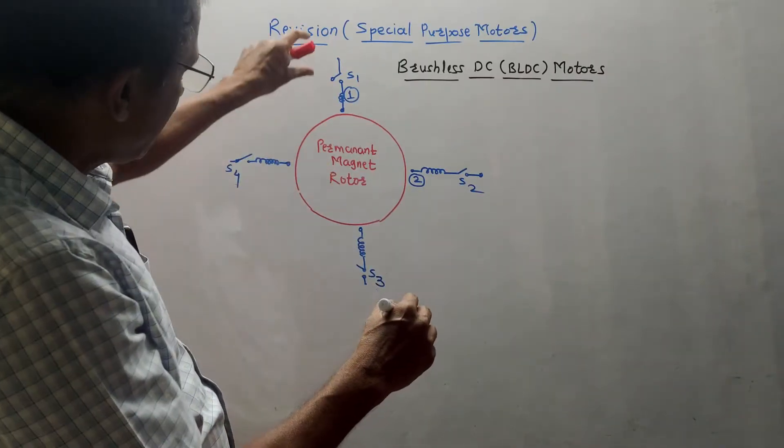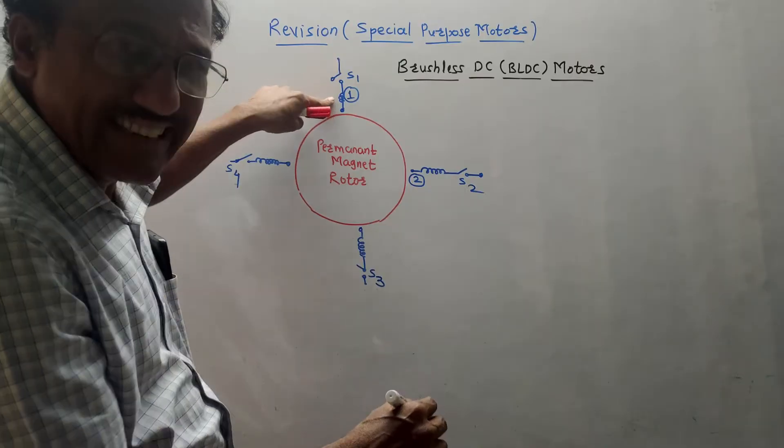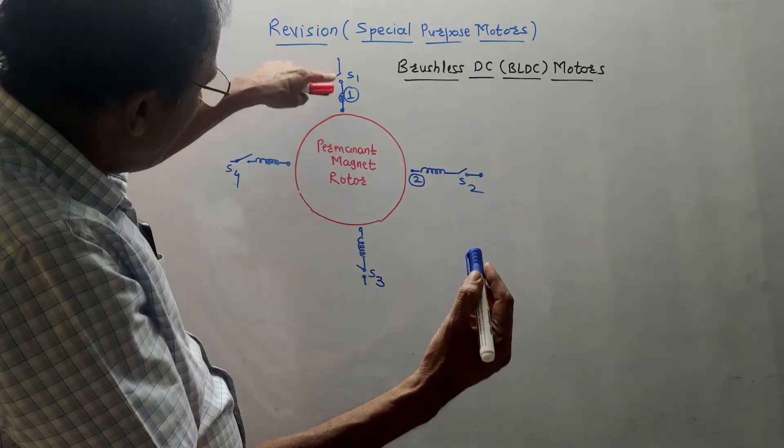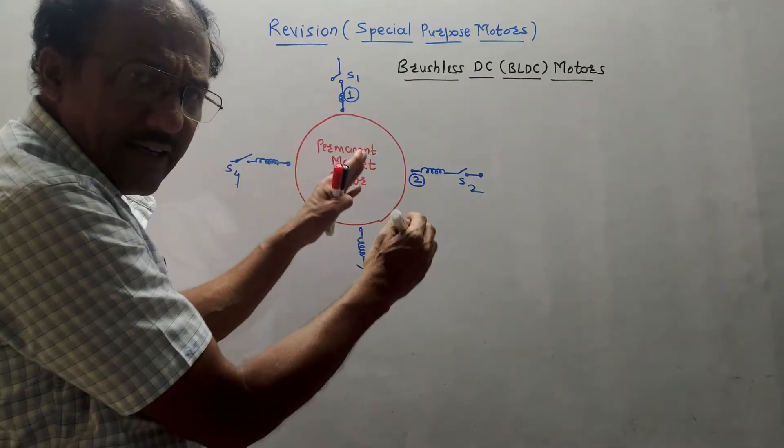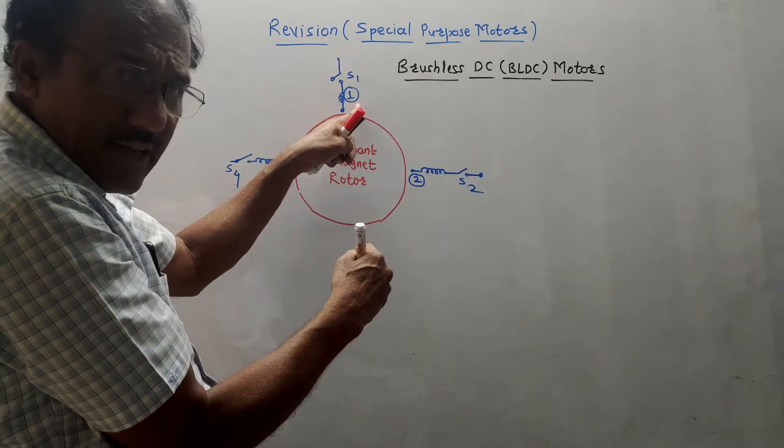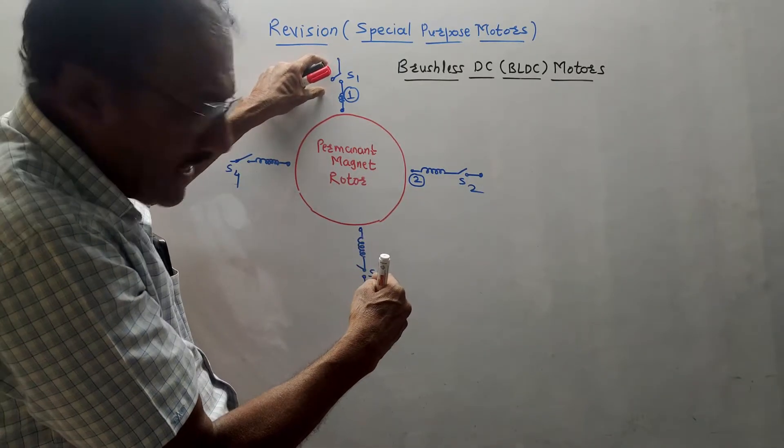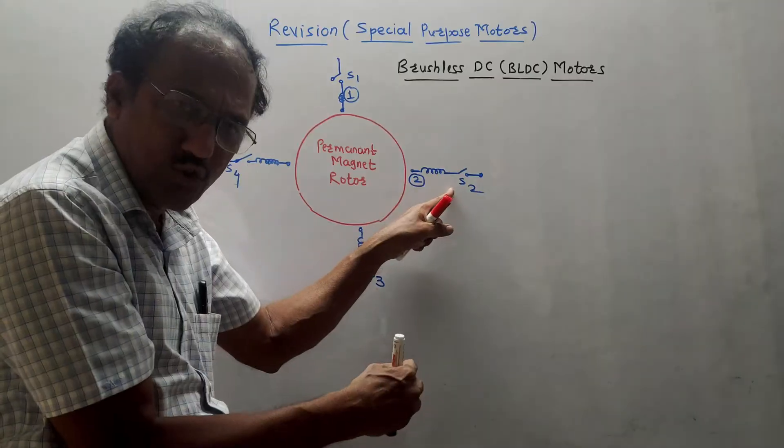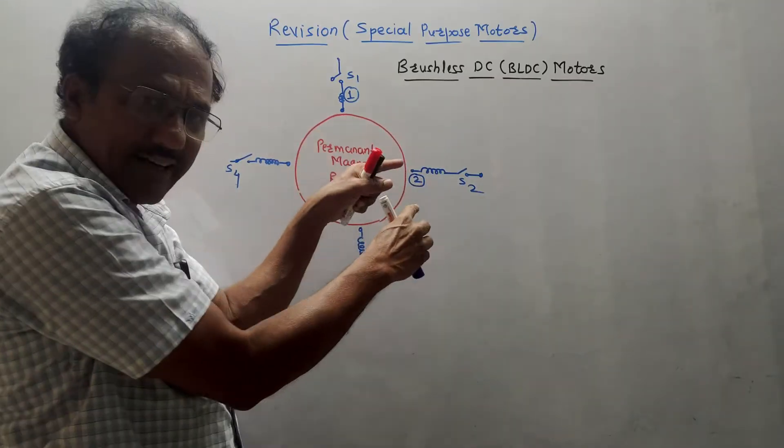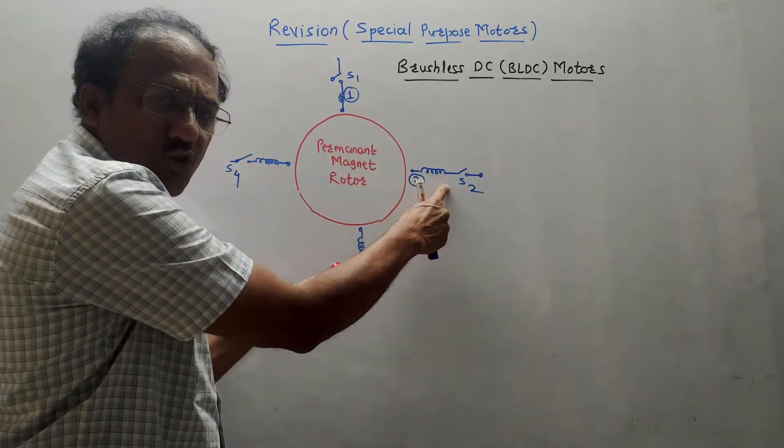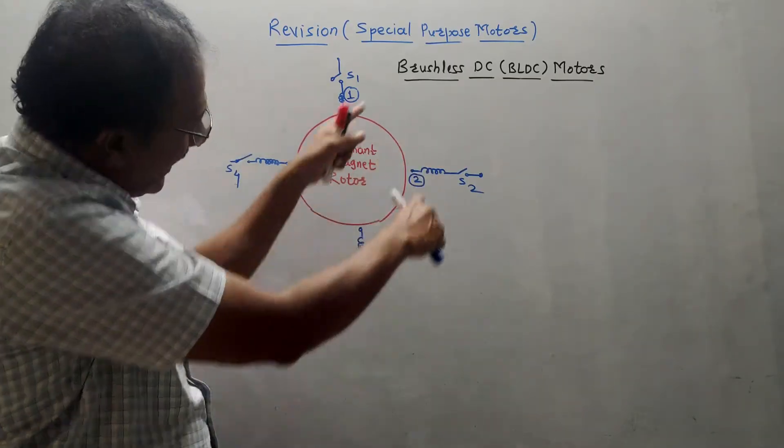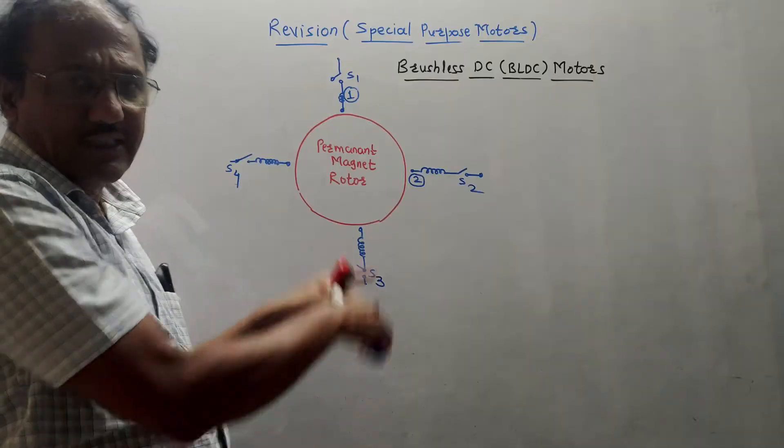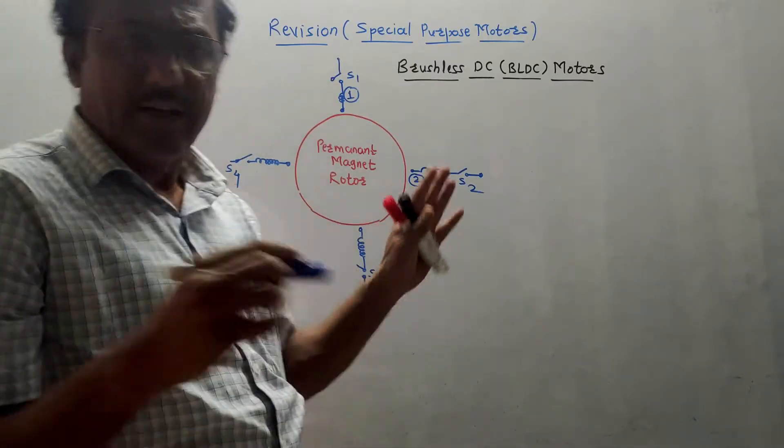For example, initially suppose this field winding 1 is energized, that means certain signal is applied using transistors or using thyristors. Then this rotor will try to align itself along field winding 1. Then suppose I will switch off this field winding 1 and switch on field winding 2. Then once this is switched on, this is switched off and field winding 2 is switched on, rotor will rotate and it tries to align along with field winding 2. Likewise, if you switch off this and switch on field winding 3, rotor will again rotate itself and tries to align along field winding corresponding to switch S3 and so on. Likewise, the rotation of rotor takes place.